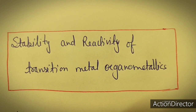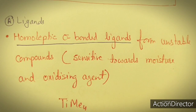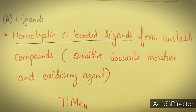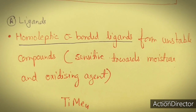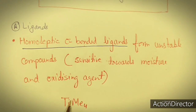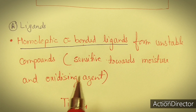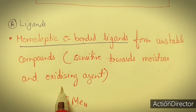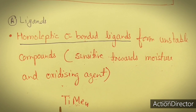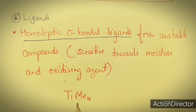The factors are two: one is metal and the other is ligand. I will start with the ligand. Ligand is one of the factors that affects the stability and reactivity of organometallic compounds of transition metals, because ligands may be homoleptic or heteroleptic type. These are sigma-bonded ligands. If ligands are homoleptic sigma-bonded ligands — meaning there is only one type of ligand in the transition metal organometallic compound — then the compound becomes sensitive towards moisture and oxidizing agents, making it very reactive and less stable.